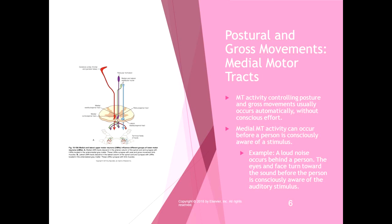Medial motor track activity can occur before someone is even consciously aware of a stimulus. For example, a loud noise happens behind you — the eyes and face turn toward the sound before the person is even consciously aware of that auditory stimulus. Those gross movements and postural movements can happen so fast that we're not even aware of them.